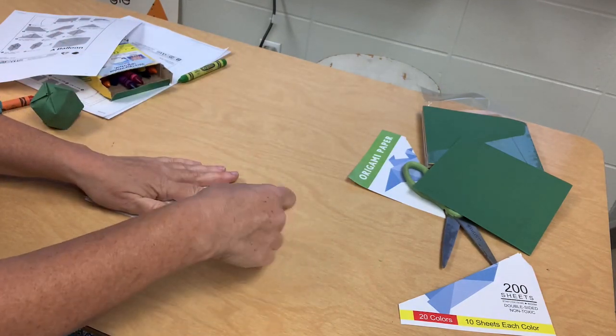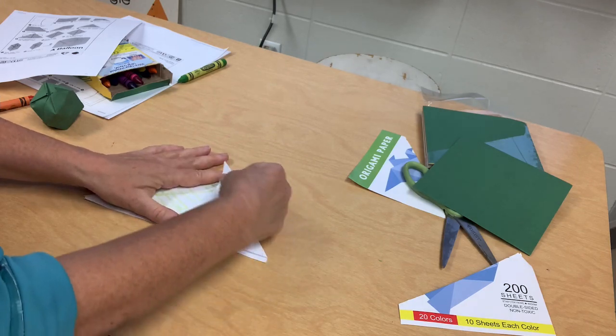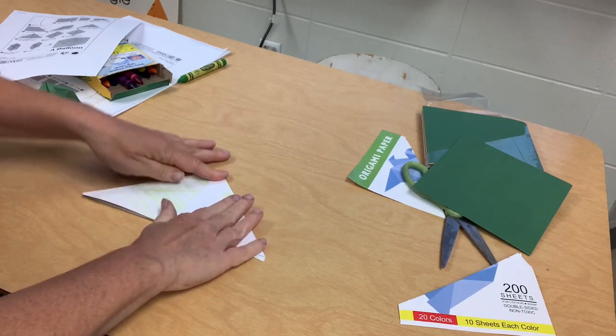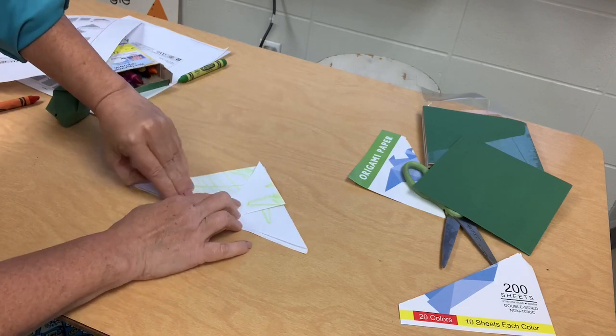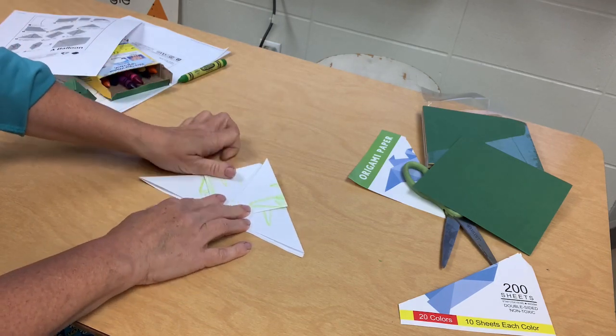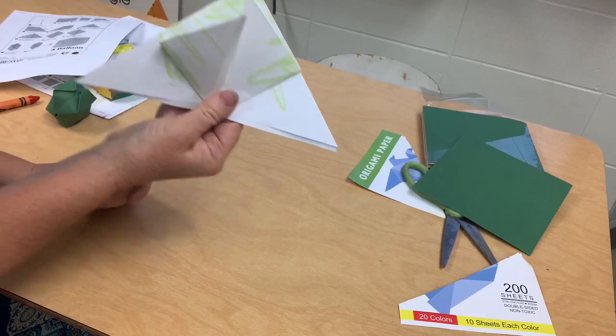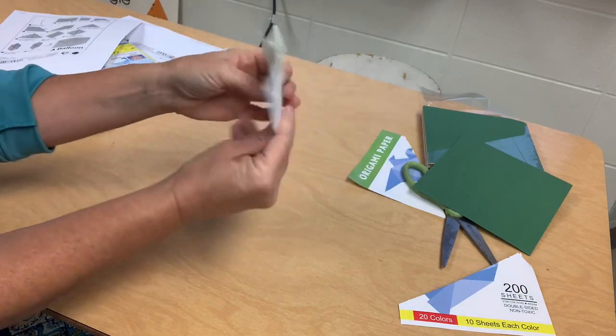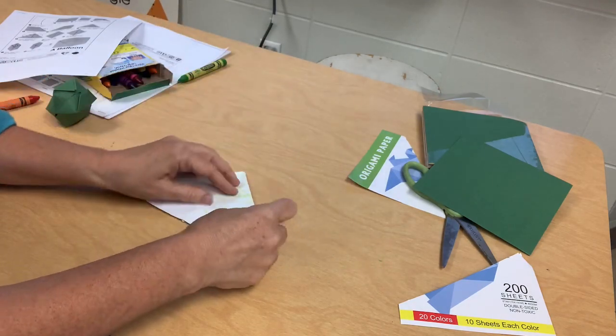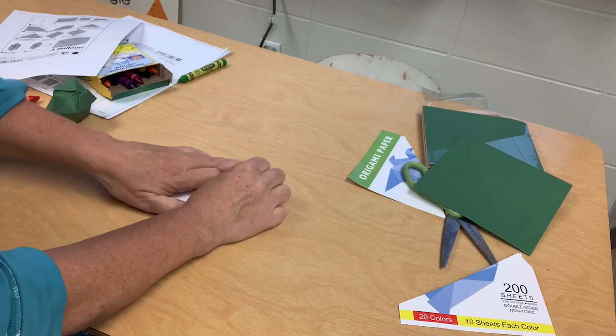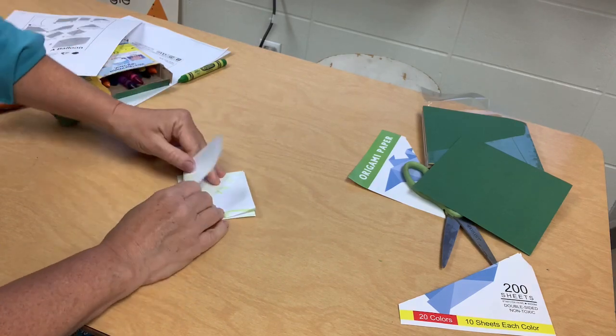So now we're going to take this side and fold it up. We're going to take this end and fold it up like that. It makes a square. Flip it over and do the same thing on the back. Fold this side up and fold this side up.